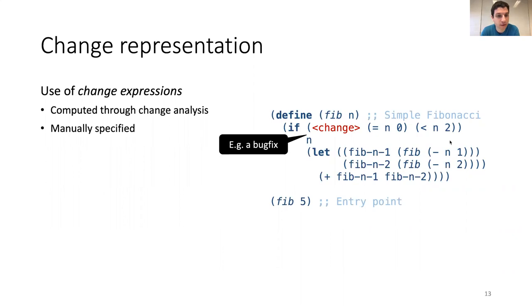So, suppose we look at our fib program and, oh no, we see that we have made an error in the end condition. So, instead of equals n zero, we want to say n has to be smaller than two. Then we can add this small change expression to denote this change.